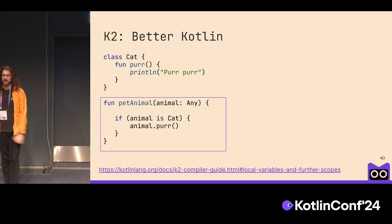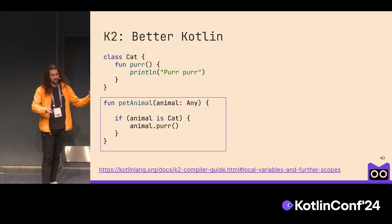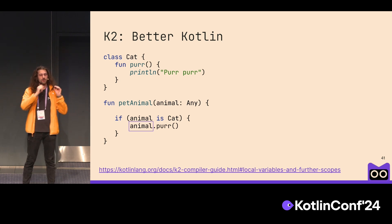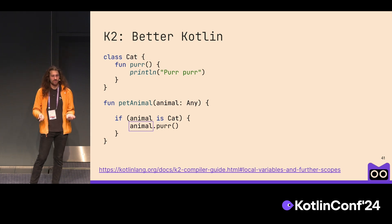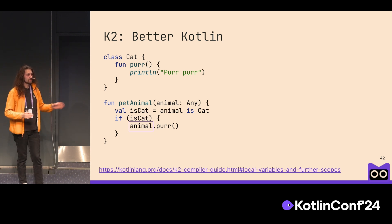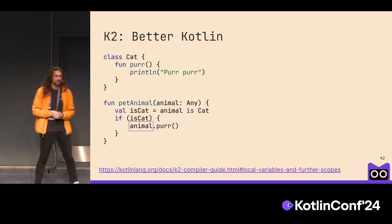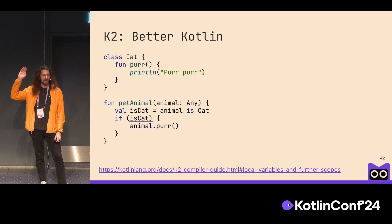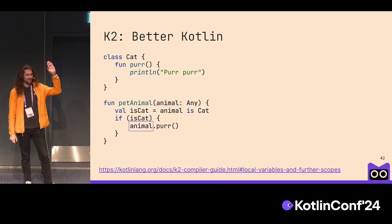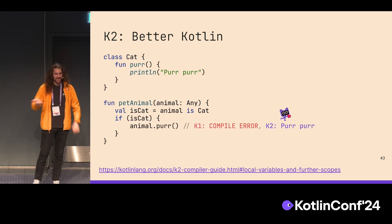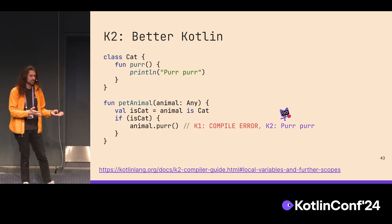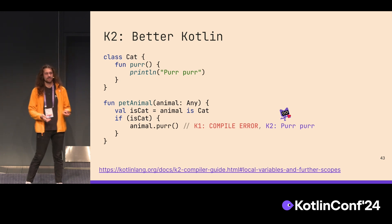Here is an example. There is a function with something called smartcast — the compiler knows we did an 'is' check, and we can call a method. That's correct. But if we refactor by introducing a variable, do you think it should compile? In K1, it doesn't. In K2, it does — we achieved that by reworking our data flow engine. It's just better.